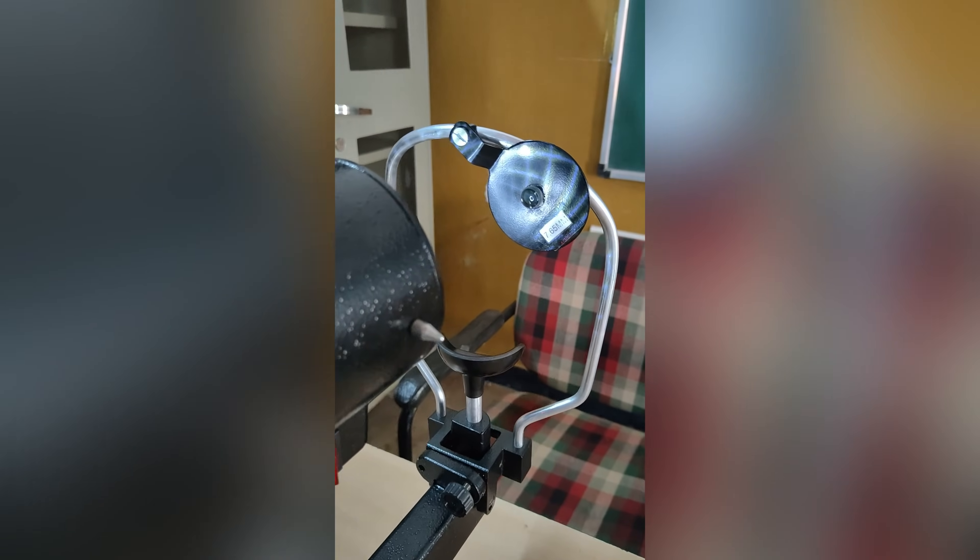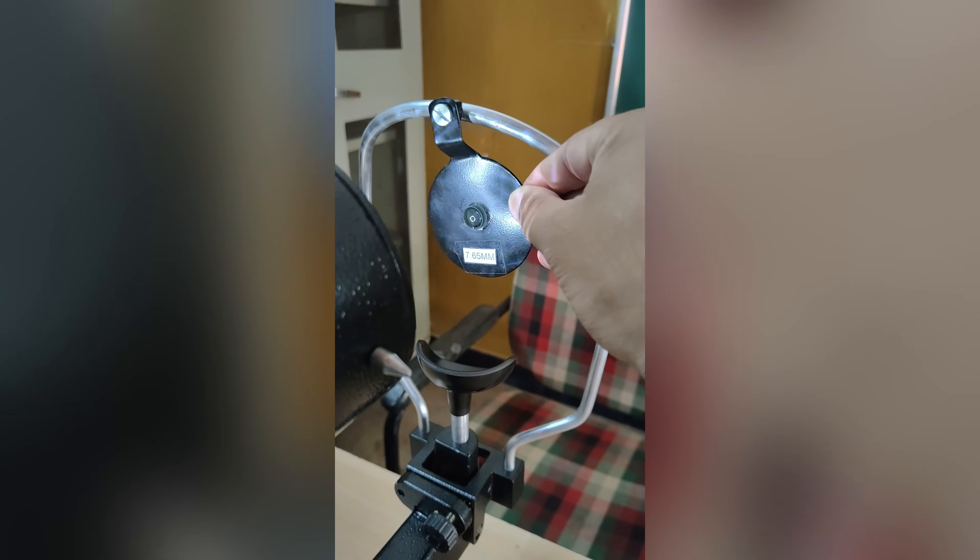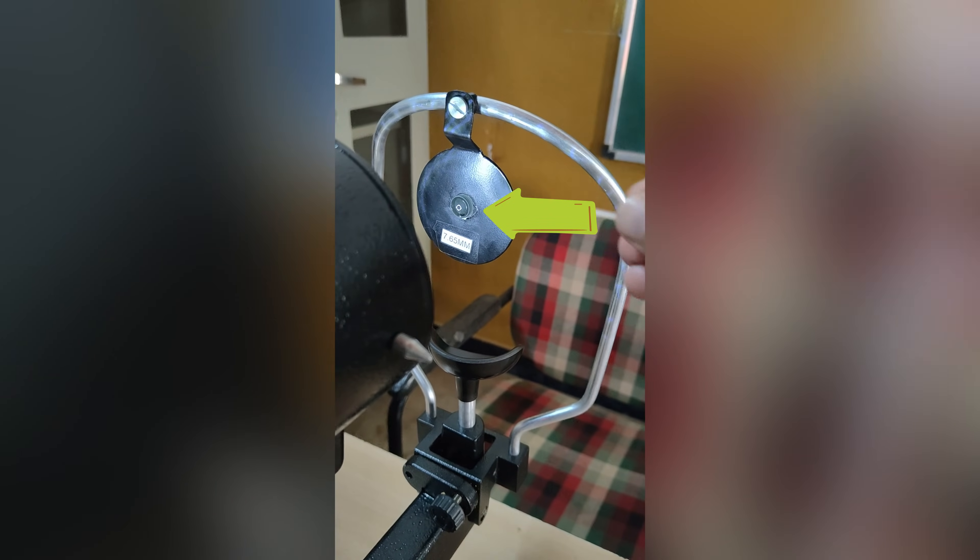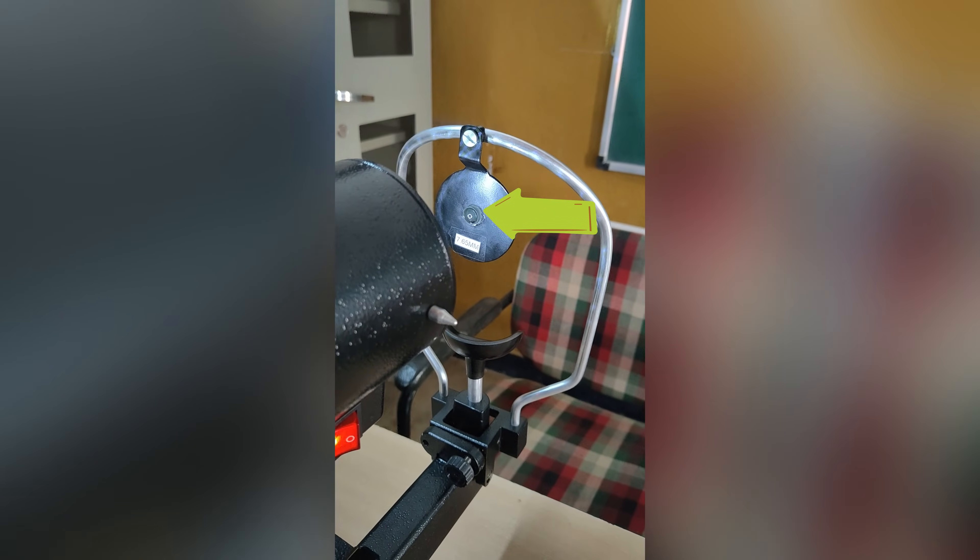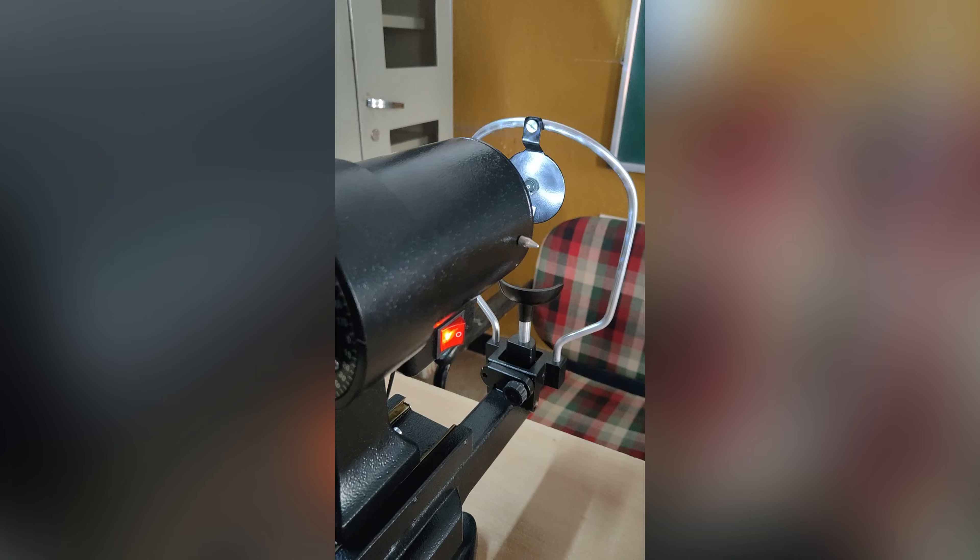Second, make sure that keratometer is giving correct results. A steel ball of known parameter is placed in front of keratometer. In our case, we are using 7.65mm.